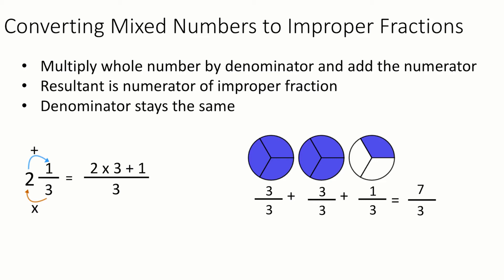So 2 times 3 is 6 plus 1 is 7, and then we keep the 3. And that answer matches what we see with the picture on the right.